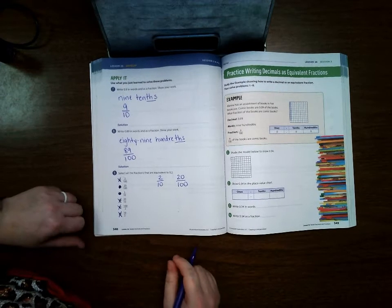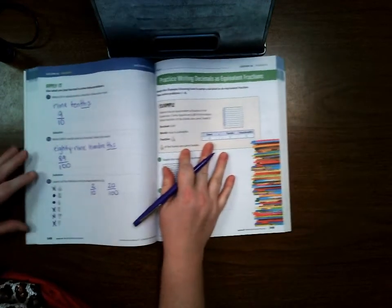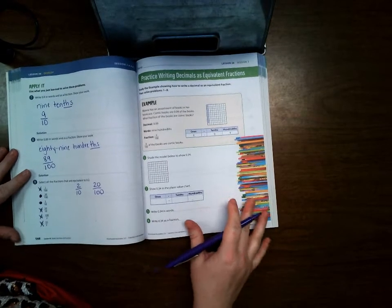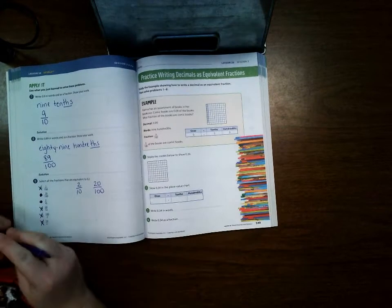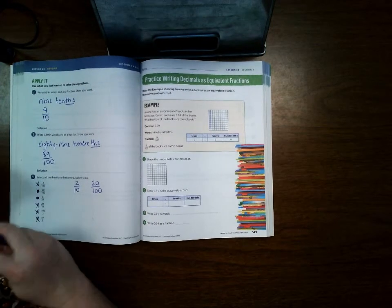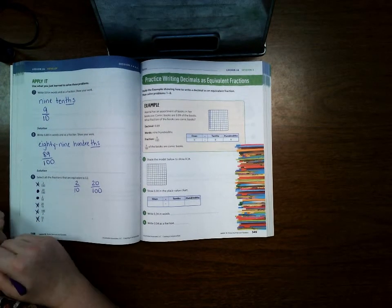If you're feeling like you're getting this, go ahead and try pages 549 and 550 on your own. Hopefully by now you're getting the hang of how decimals and fractions are related to each other.